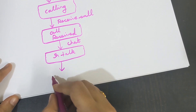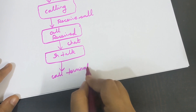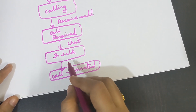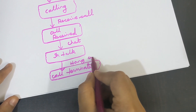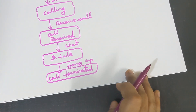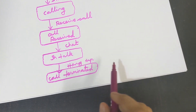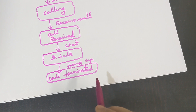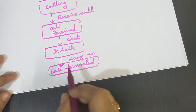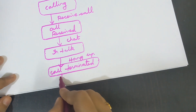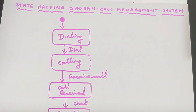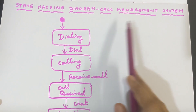The next state is 'call terminated.' It will not directly change from in talk to call terminated — the event 'hang up' must happen. Hang up means ending a phone call. Only when the hang-up event takes place will the state change from talking to call terminated. After the call is terminated, the call management system process ends. Draw the stop symbol: a bigger circle with a smaller circle inside, with the smaller circle colored in. This is the final diagram.